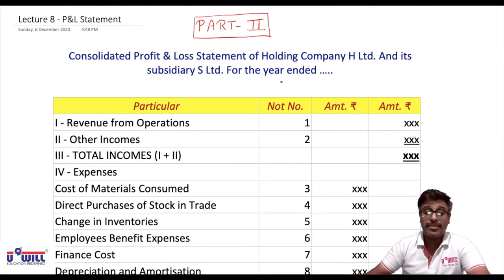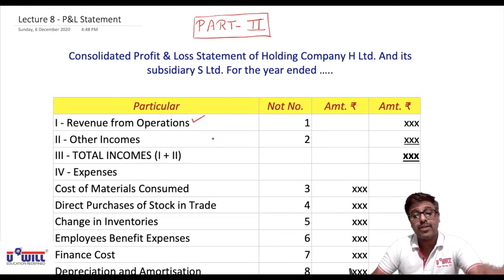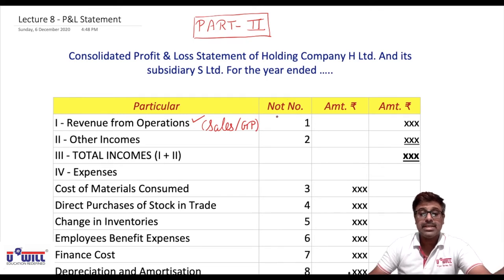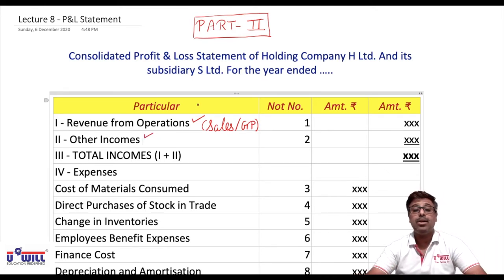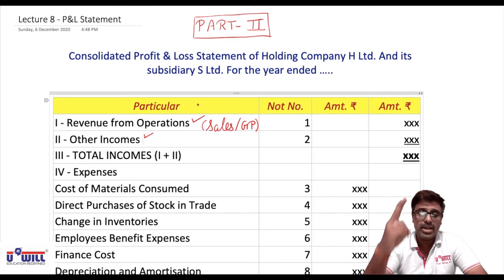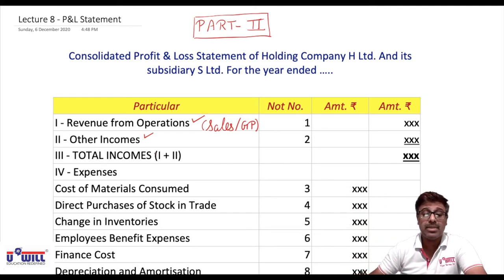The trick to remember this format: there are only two incomes. First is revenue from operations, which will include sales or, if gross profit is directly given in the question, it will include gross profit - made in note number one. Second is other income, where all other incomes are categorized. Total income equals revenue from operations plus other income.